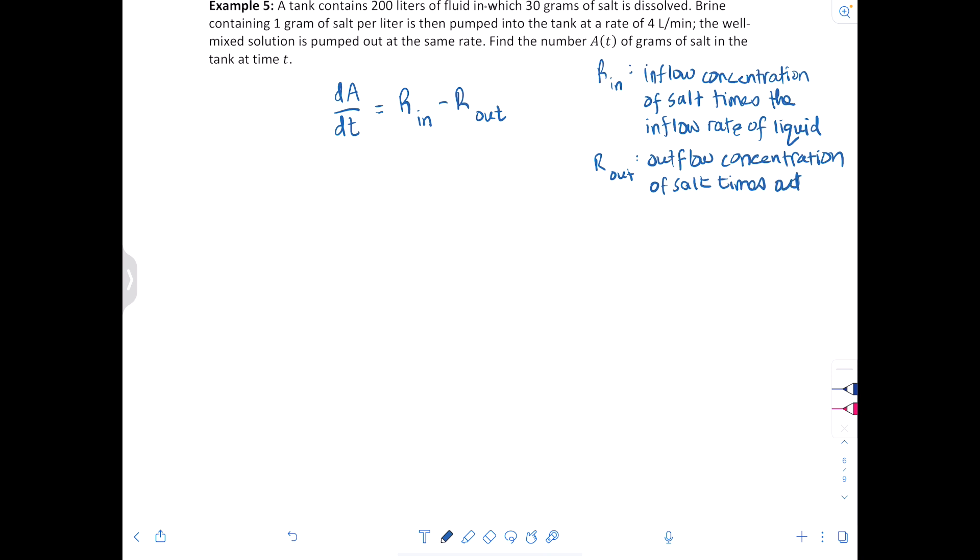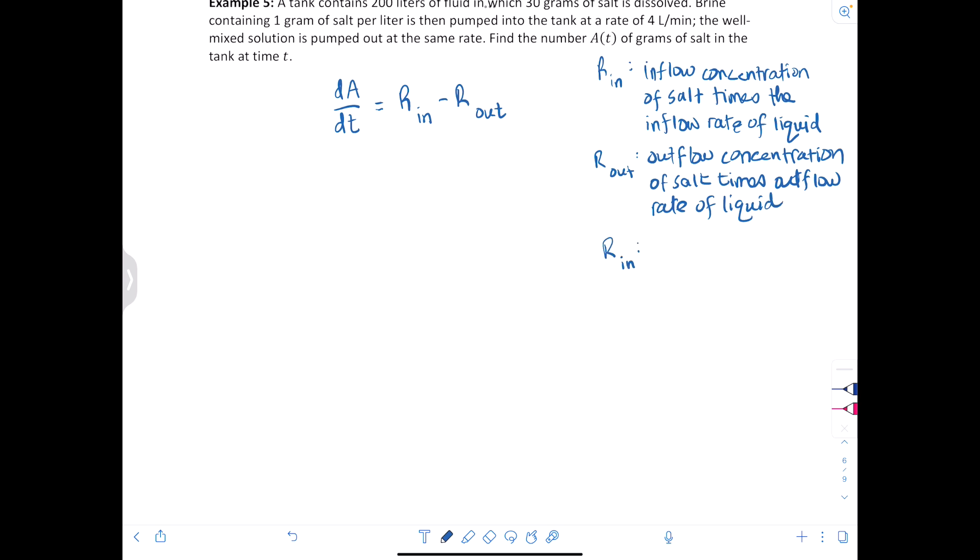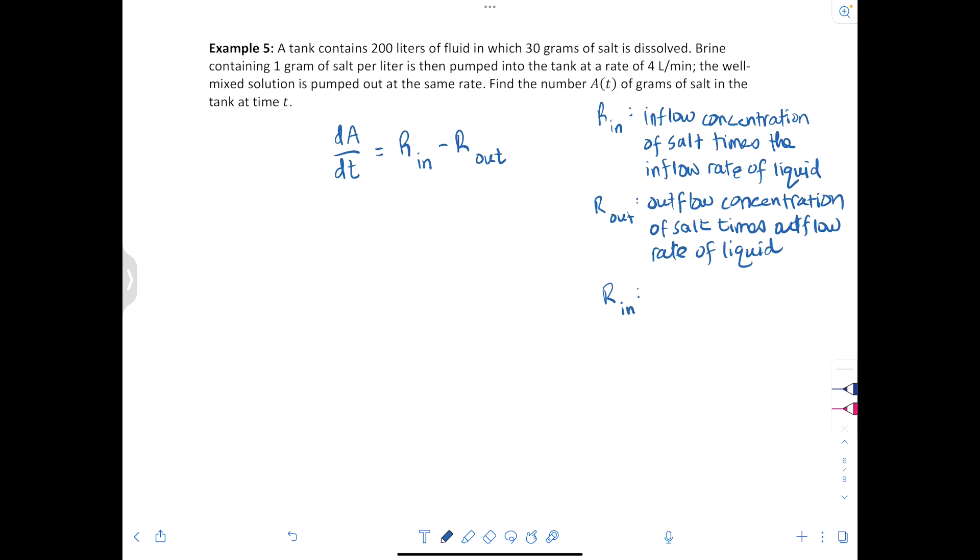Let's see what's flowing into the tank. So it says that brine containing one gram of salt per liter is pumped into the tank at a rate of four liters per minute. So we would have basically one gram per liter times four liters per minute, and we got that information from this line.